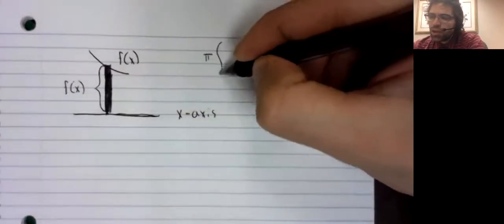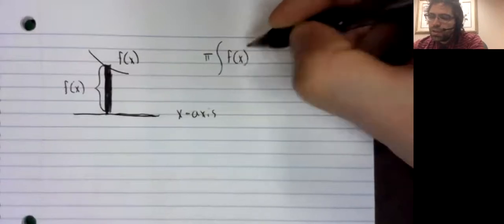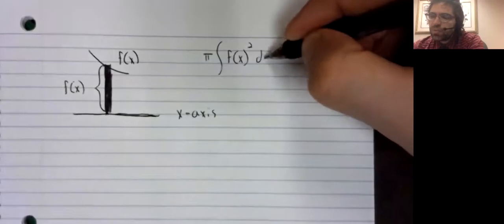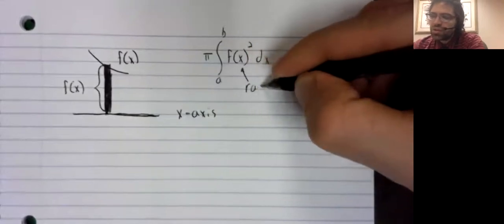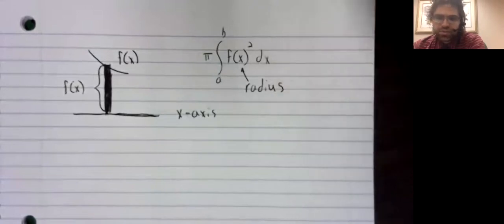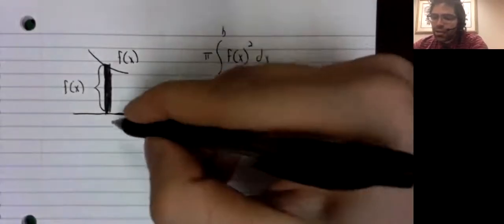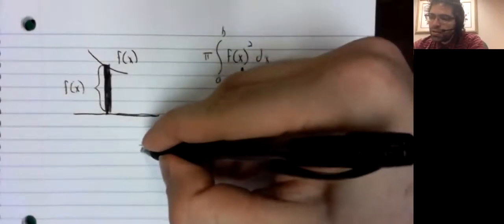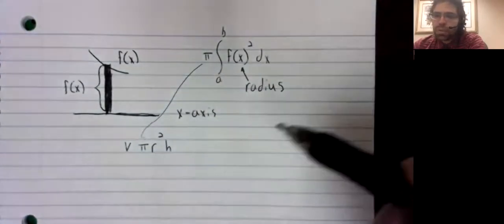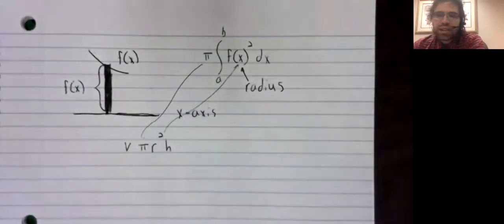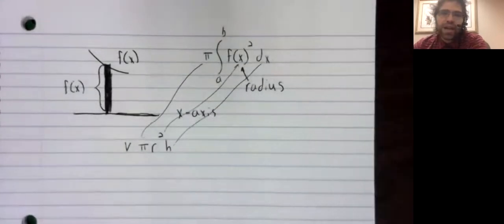And when we got to this integral, the f(x) squared term represents a radius being squared. This comes from pi r squared h, the volume of a cylinder. Here's the pi, here's the radius squared, here's the h.